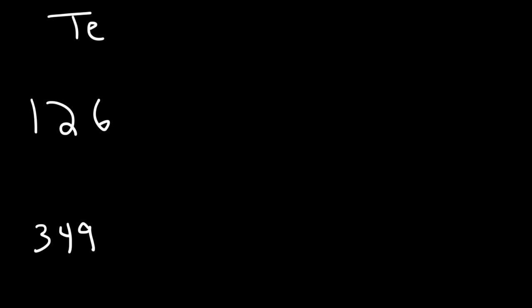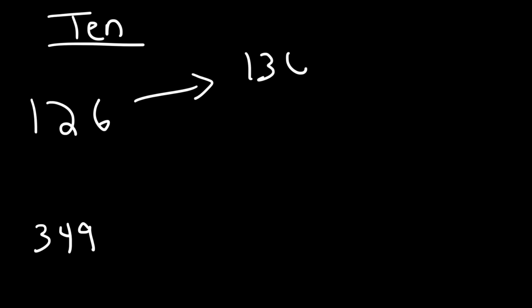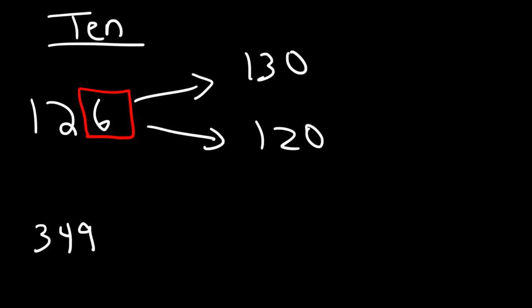Let's try another example: 126 and 349. Go ahead and round them to the nearest ten. So here is the tens place. We either keep it two or we round it up to three, and this is going to turn to a zero — so either it's going to be 130 or 120. Well, looking at six — six is in the category of five or more, so therefore we need to round up to 130.